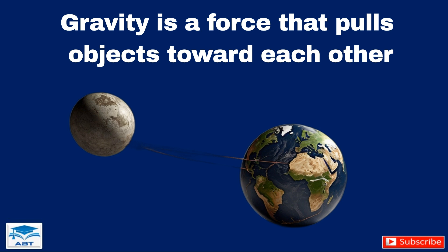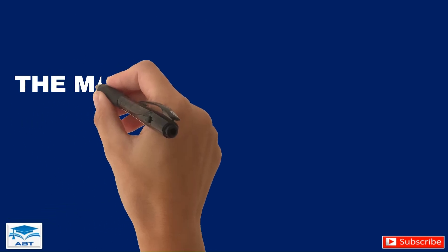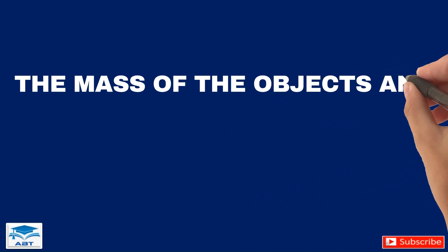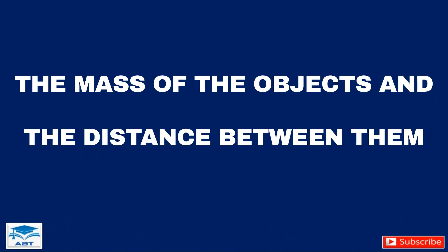The force of gravity depends on two things: the mass of the objects and the distance between them. More mass means stronger gravity. That's why we feel the Earth's gravity so strongly.